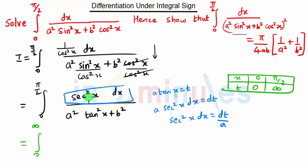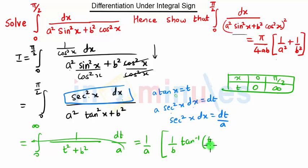sec²x dx is dt/a upon a², and we are putting a·tan x as t, so it will be t² + b². So a is constant, we take a outside. We have 1/a, and integration of 1/(t² + b²) will be (1/b)tan⁻¹(t/b), and then we apply the lower limit and upper limit of t.